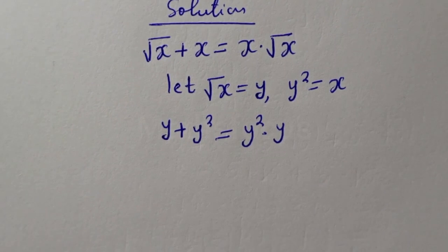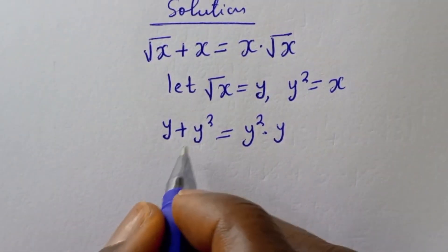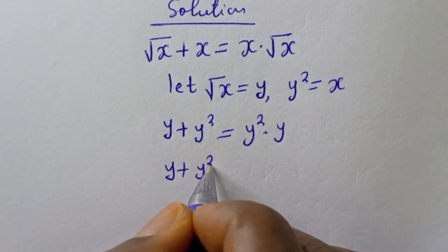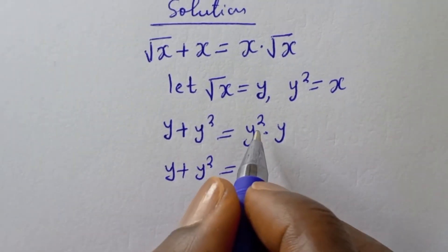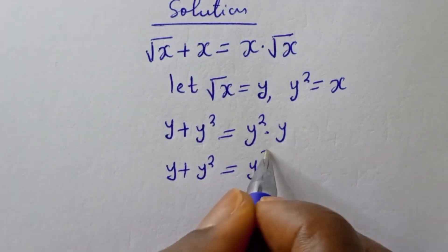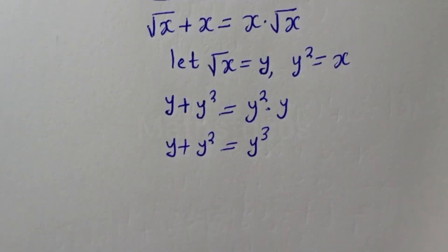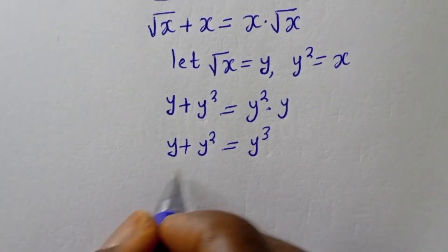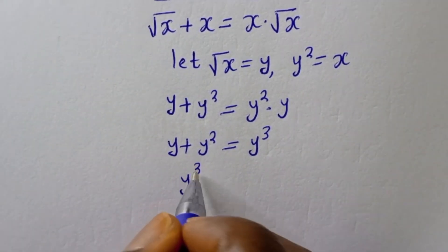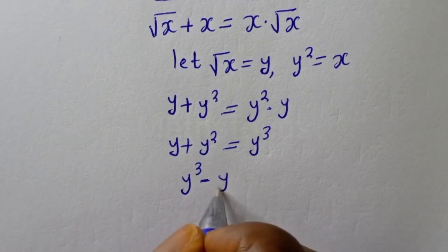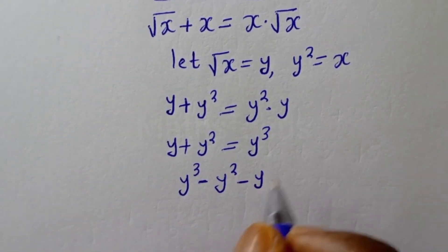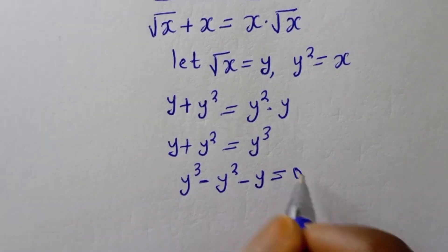So we have y plus y squared equals y squared multiplied by y, which is y raised to power 3. Let's equate everything to zero: y cubed minus y squared minus y is equal to zero.